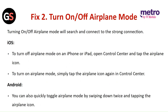Fix 2: Turn on and off airplane mode. Turning on and off airplane mode will search and connect to a stronger connection. For iOS, to turn off airplane mode on an iPhone or iPad, open the Control Center and tap on the airplane icon. To turn it back on, simply tap the airplane icon again.